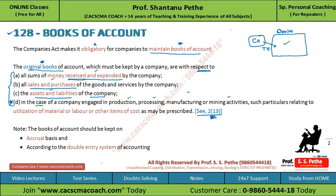The fourth point you need to understand and write carefully. This applies only to companies that are engaged in production, processing, manufacturing, or mining activities. These companies must maintain particulars relating to utilization of material and labour and other items of cost as may be prescribed. Students normally forget to write this fourth point in the exam, so remember it.